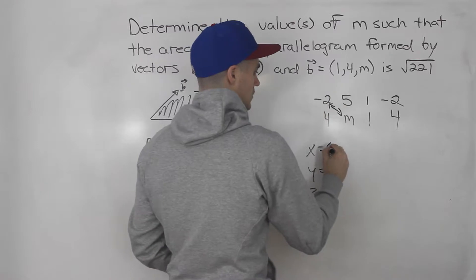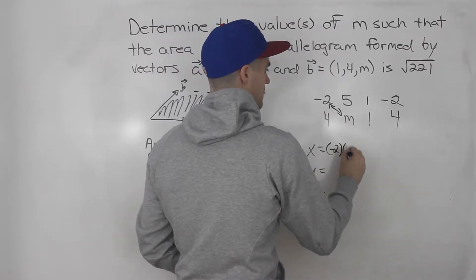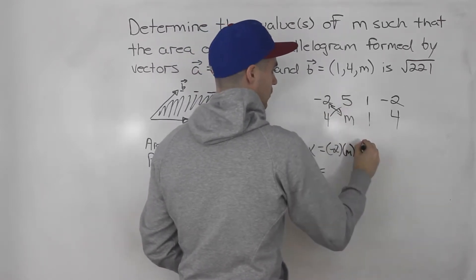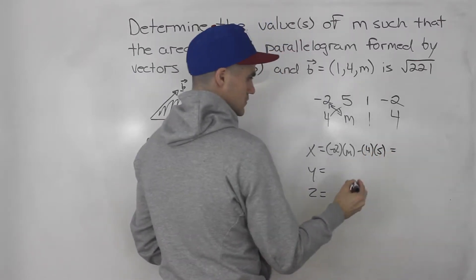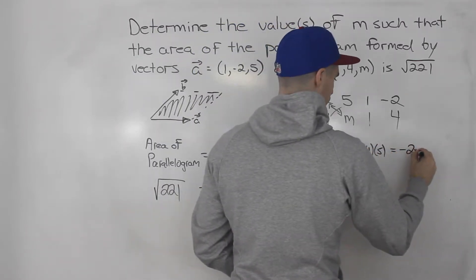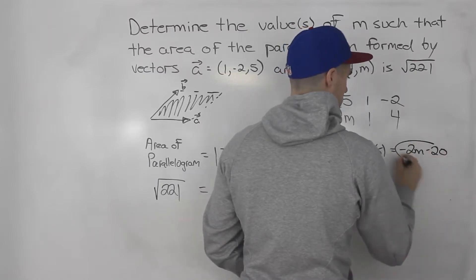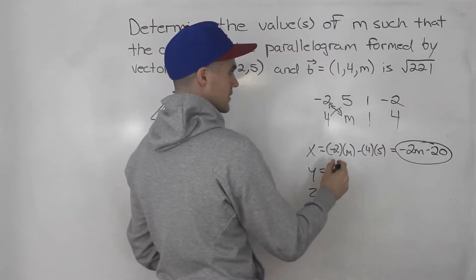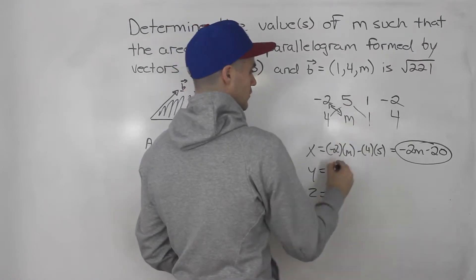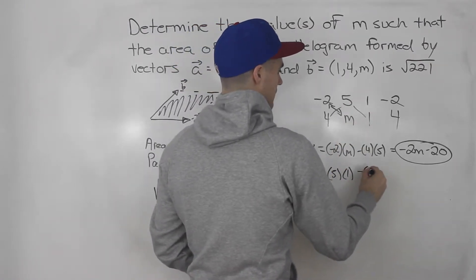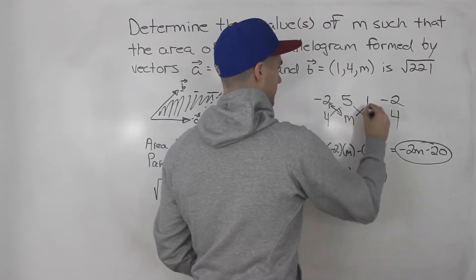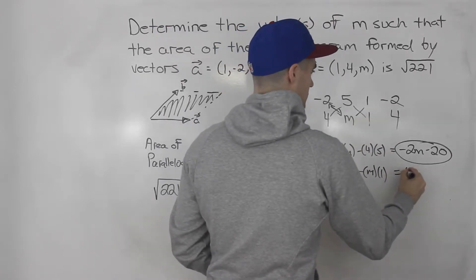Now we can find out the x, y, and z components of the cross product. Starting with the x component, negative 2 times m minus 4 times 5, which gives us negative 2m minus 20. So that is the x component of the cross product. Y component, we go 5 times 1 minus m times 1, which would be 5 minus m.